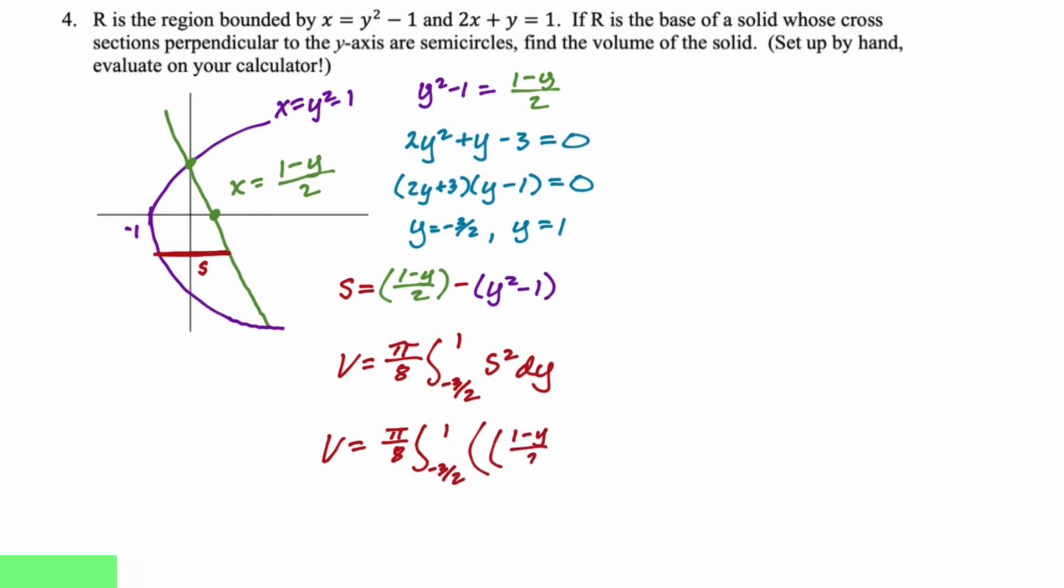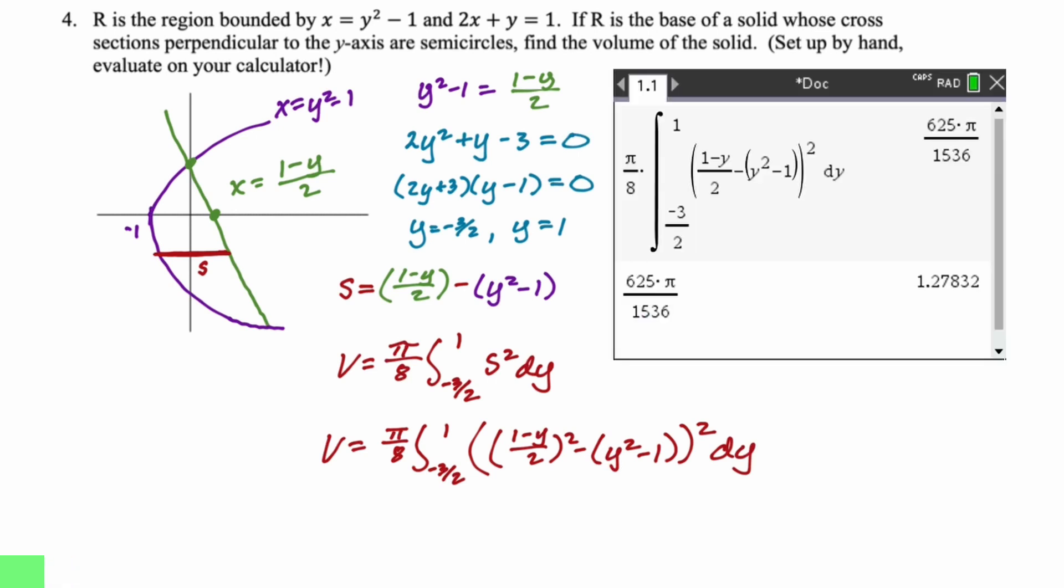I'm going to rewrite that thing. I like to substitute back in for s, even though technically the work is probably good enough because we did clearly define what s is. I don't like to have s and dy. I think that looks a little weird. So I rewrite it like this, grab a calculator, punch all this in. I'm going to go with a decimal answer because I think it's easier to write. So 1.278. And there you go. All right. So that's the problem set. I hope this was helpful and good luck.